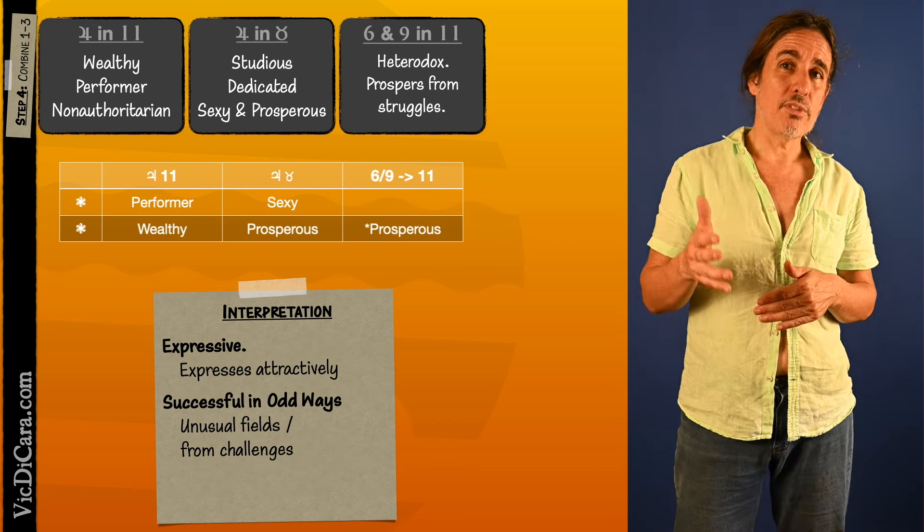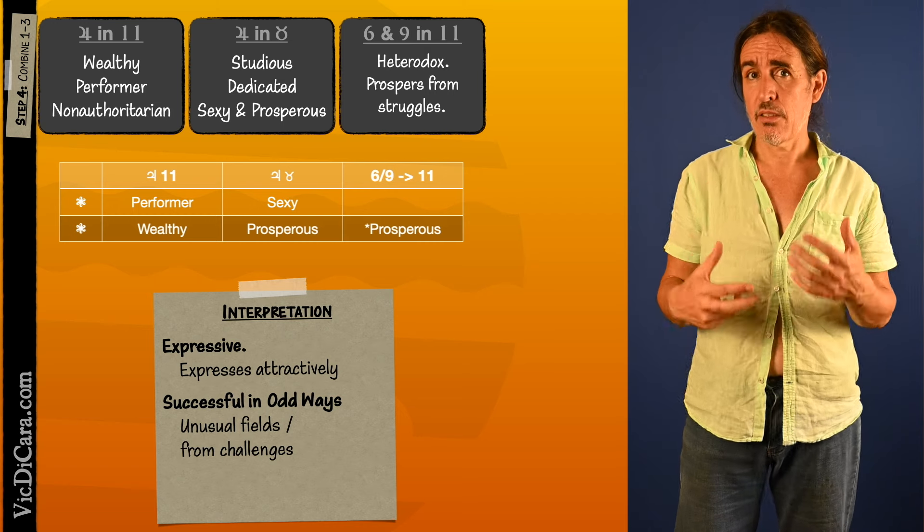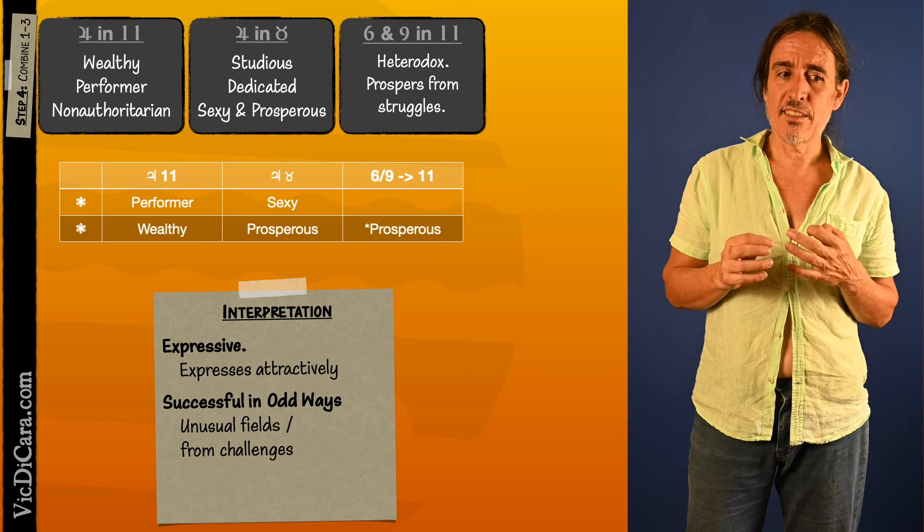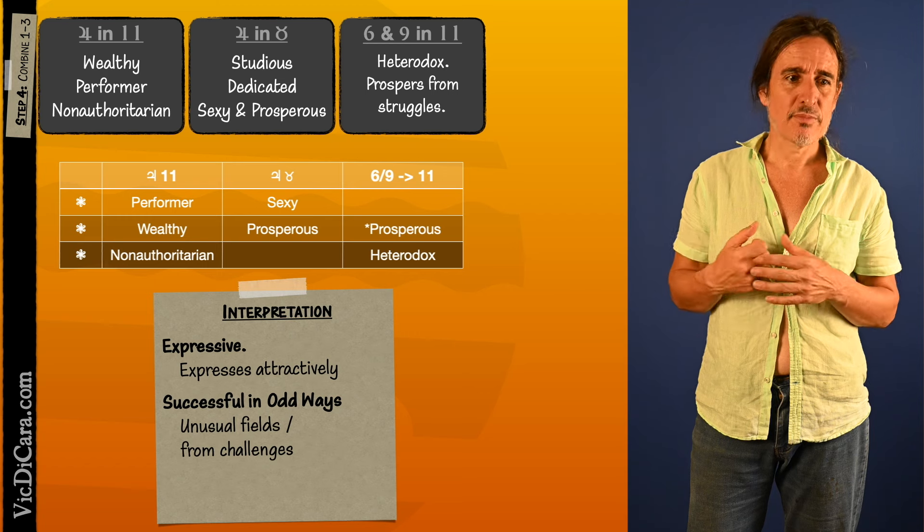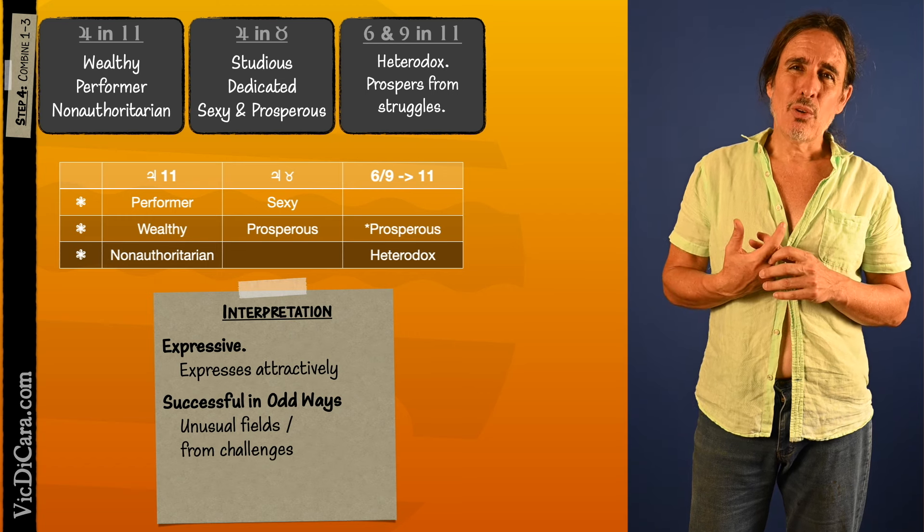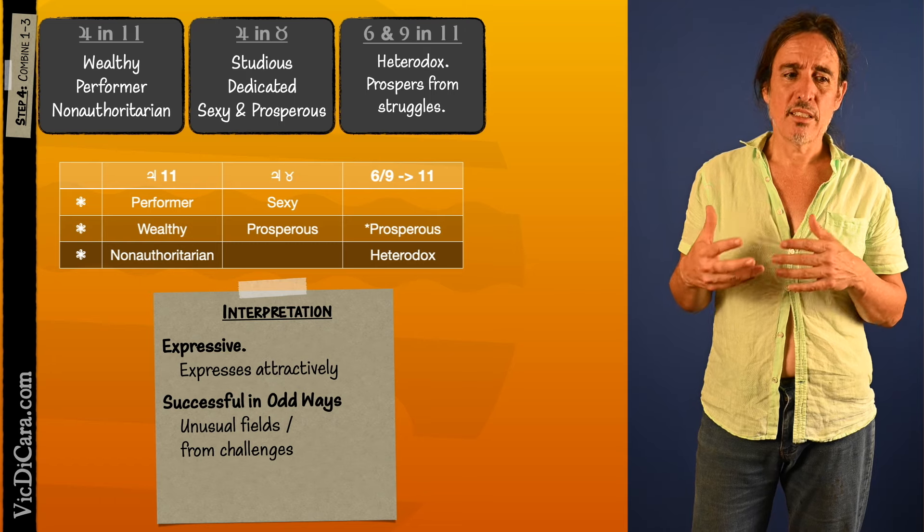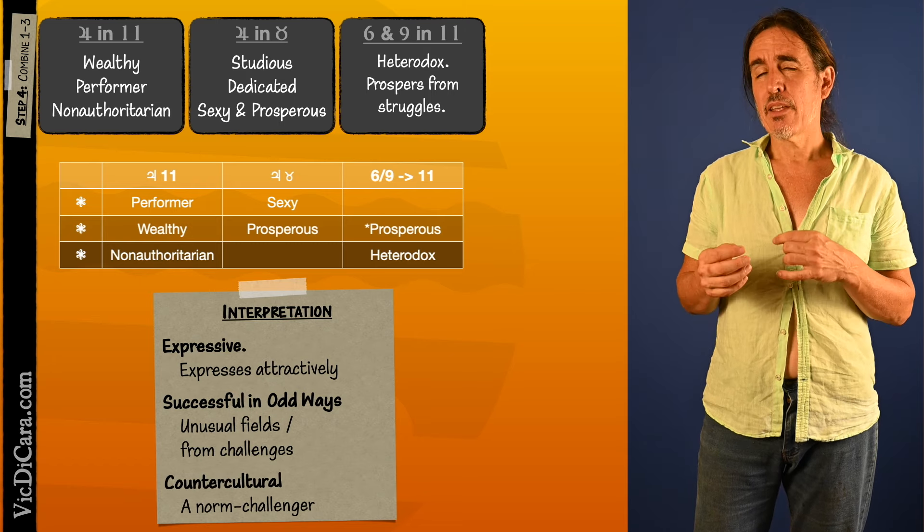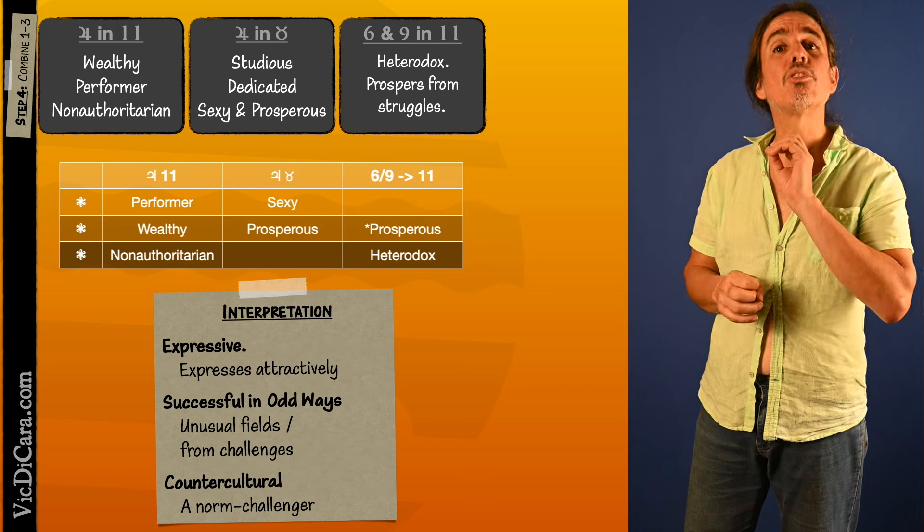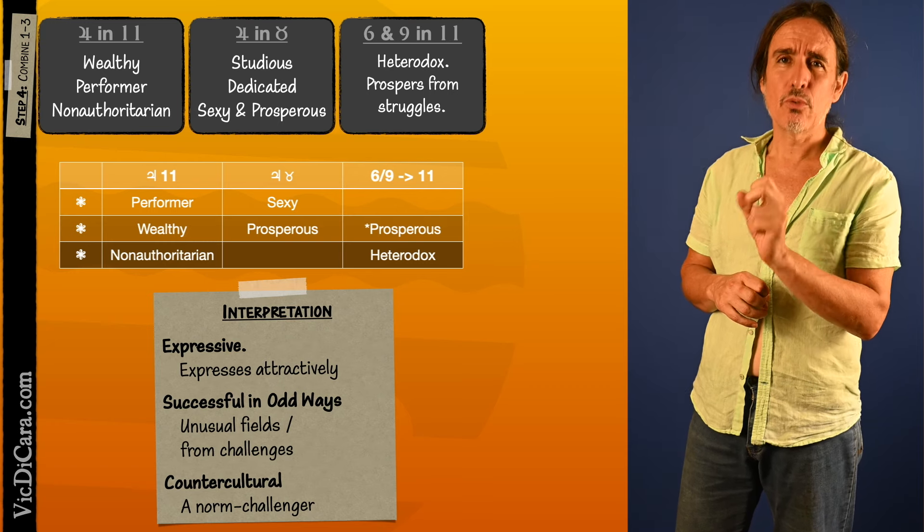The third thing is that Jupiter in the 11th house is not authoritarian and the sixth and ninth lord in the 11th house is also heterodox. So we can say that Jupiter in Taurus in the 11th house is quite counter-cultural, sort of in an aggressive way like they would like to challenge norms.